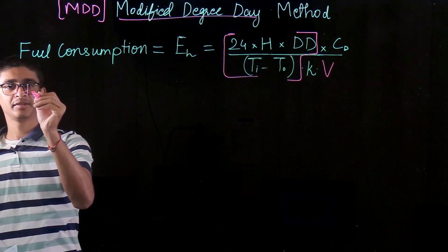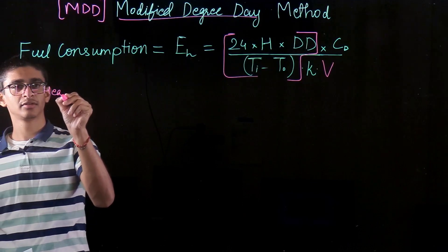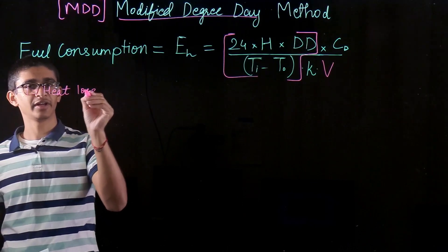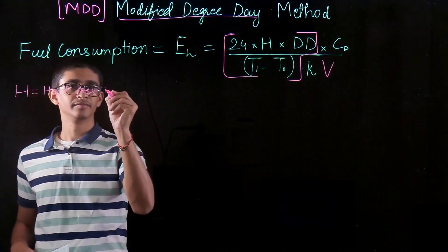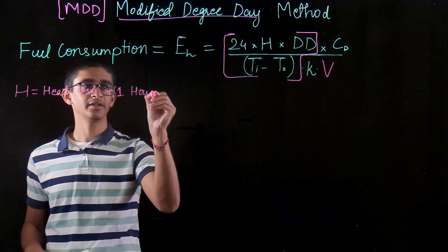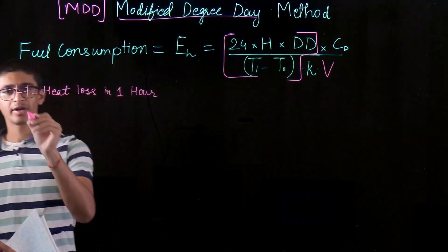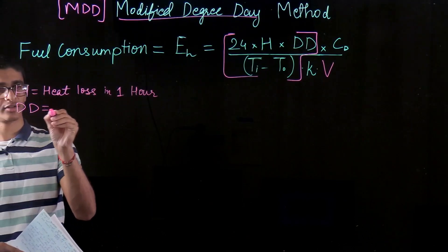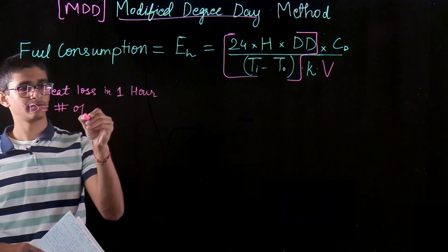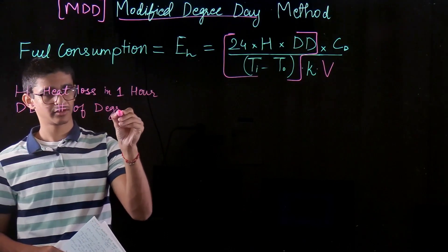So H is the building heating estimate, heat loss which is the same factor we had earlier in one hour from the building. DD we already know is the degree days, that's the number of degree days.